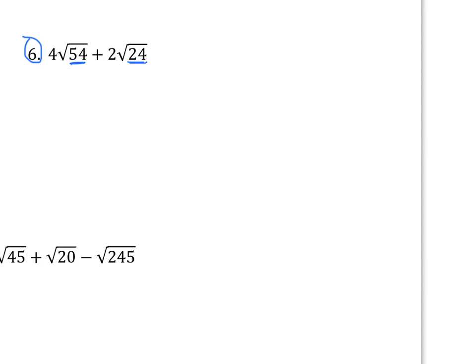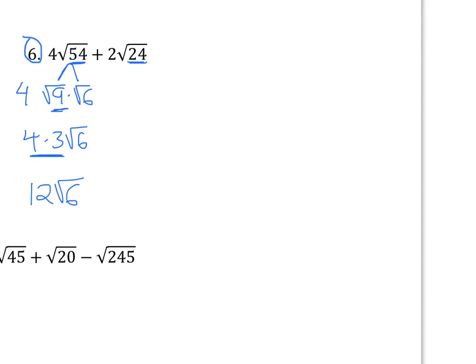All right, I'm going to bring down the four. And then 54 — a perfect square that goes into it is nine, and it goes into it six times. I'll work with this first, then I'll work with the two root 24. This square root of nine is three, so we have four times three times the square root of six. I can only multiply this: four times three is 12, and we're left with 12 root six. That square root of six can't be simplified any further.